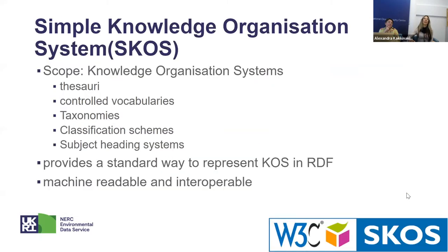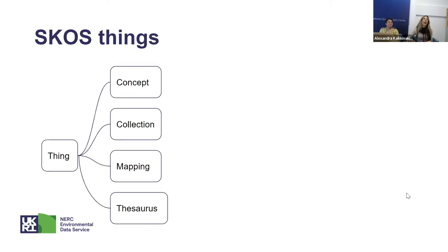In the same way as FOAF describes people in RDF, SKOS — which is the Simple Knowledge Organization System — provides a standard way to represent knowledge organization systems in RDF. For SKOS, the scope of knowledge organization systems includes thesauri, controlled vocabularies, taxonomies, classification schemes, and subject-heading systems. When you encode your KOS with SKOS, you make your KOS machine-readable and interoperable.